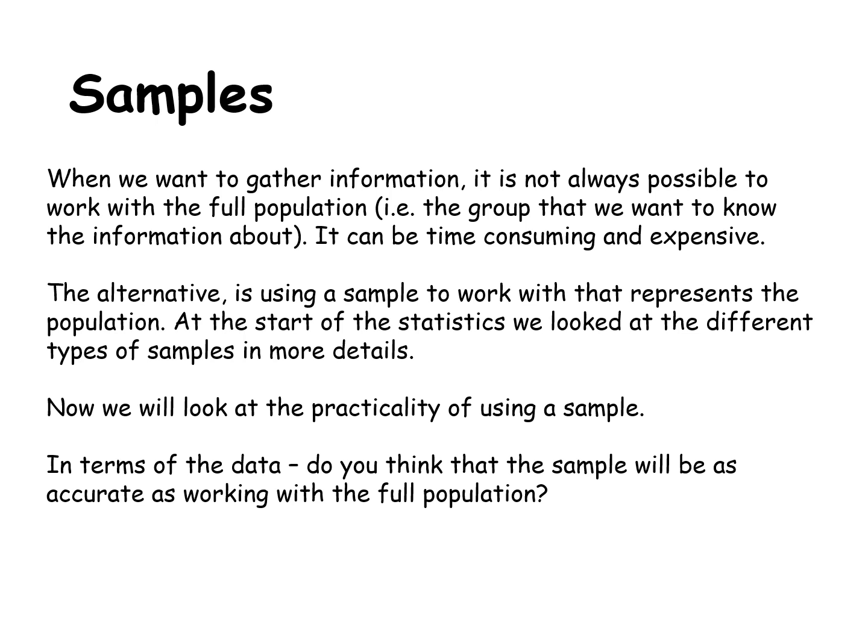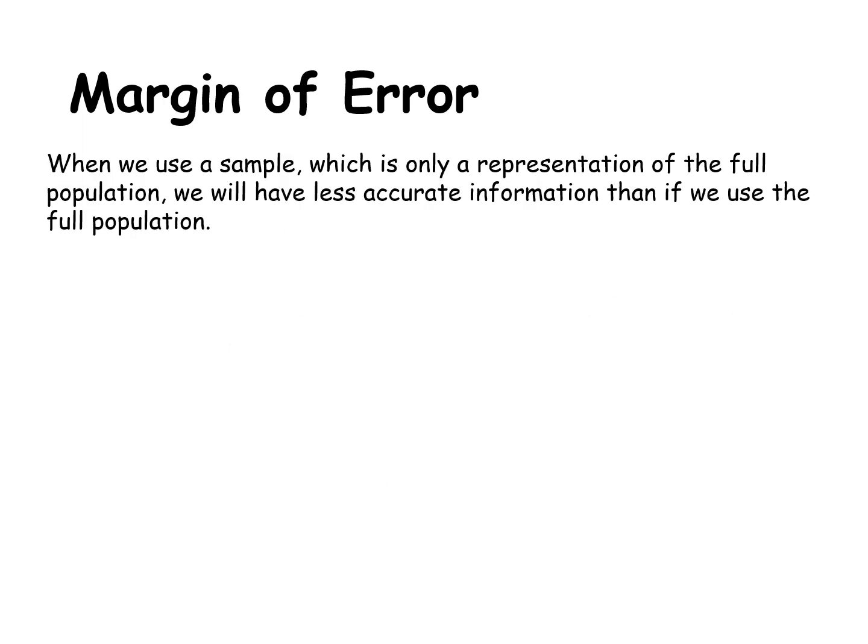The reason is you have a small number of people who are trying to represent the population. So that might happen but it might not. So we would never think of the sample as being as accurate as the full population. But it's a trade off. We end up with something that's less accurate but it means that it is a lot easier to compile and it's not as expensive.